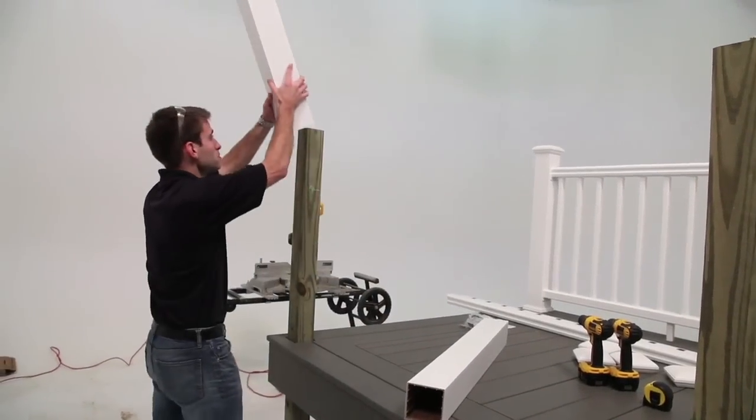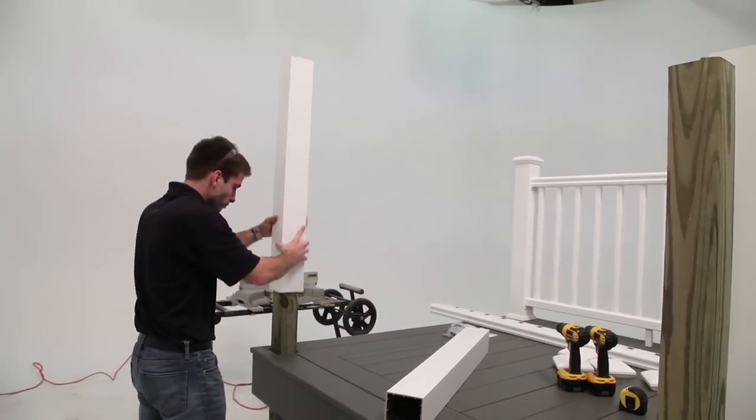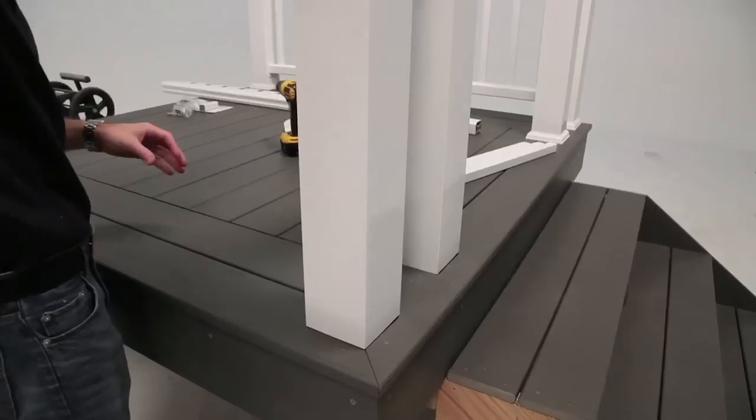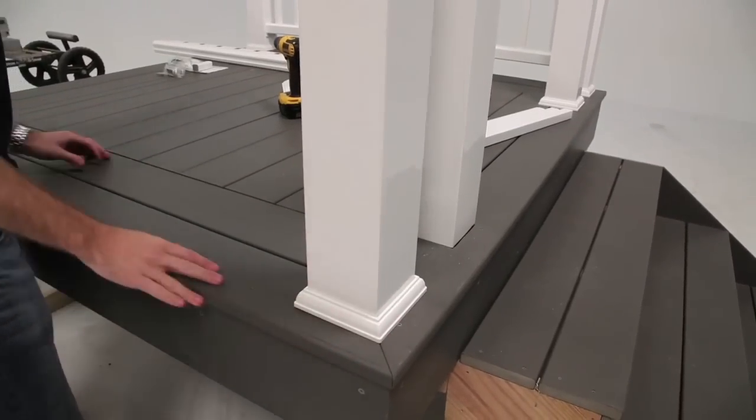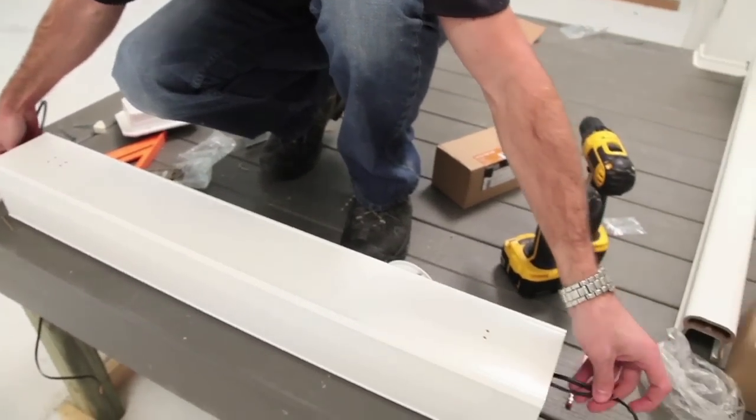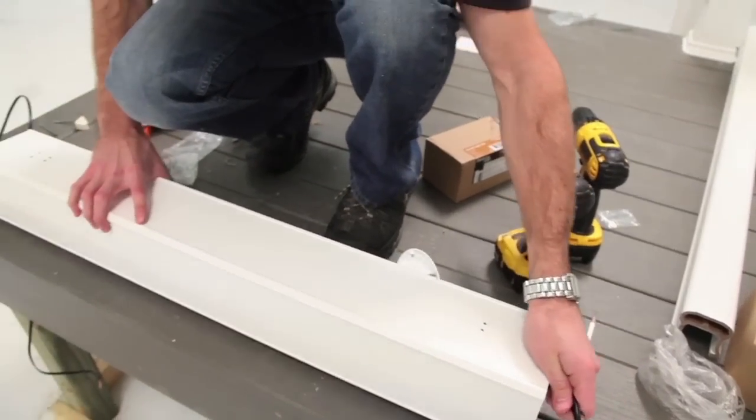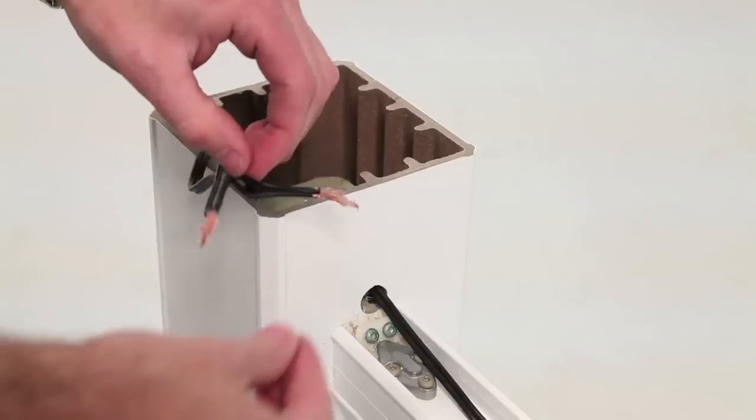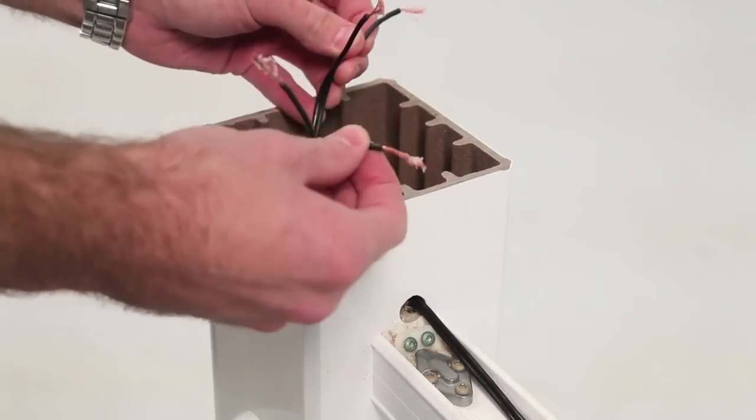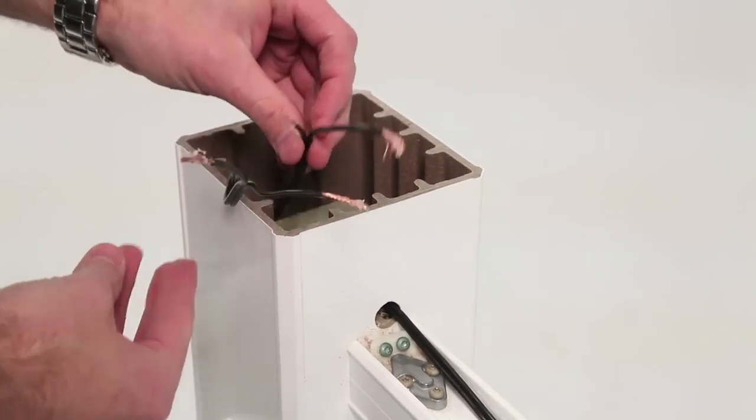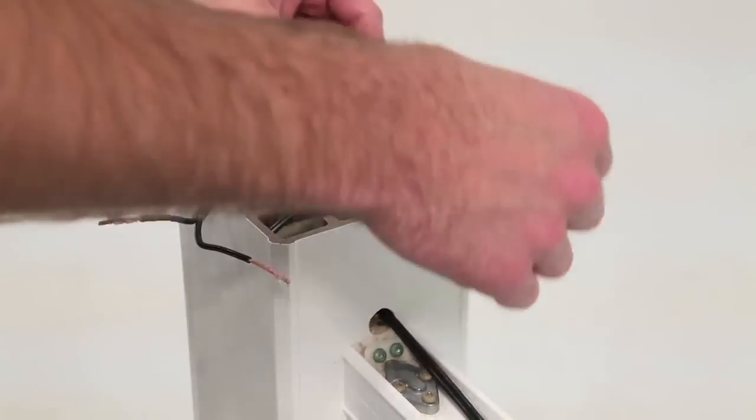Slide the post sleeve and post skirt down to the deck surface. When installing lighting with a 5x5 or 5.5x5.5 post sleeve, you can feed the 16x2 wire between the post and post sleeve. For a 4x4 post sleeve, you may need to route a notch or cut a chamfer in the corner of your 4x4 to feed the 16x2 wire.